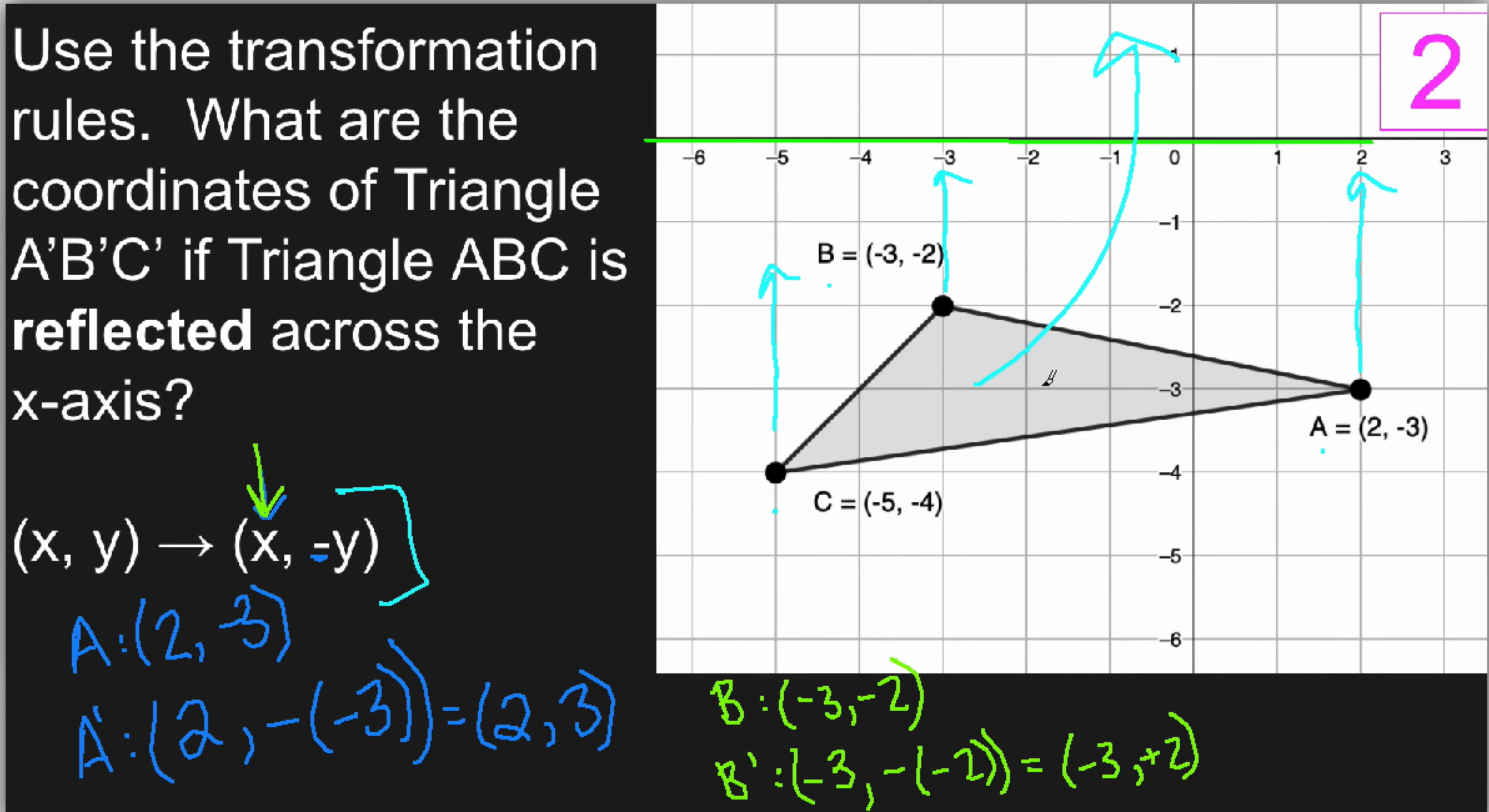And finally, for C, C is located at negative 5, negative 4. So C prime will be located at the value of x. That doesn't change, so negative 5 will stay the same, comma the opposite of my y value, the opposite of negative 4. So C prime is located at negative 5, positive 4.